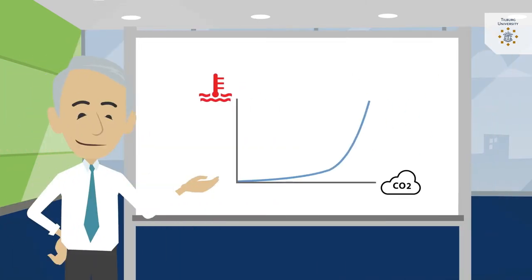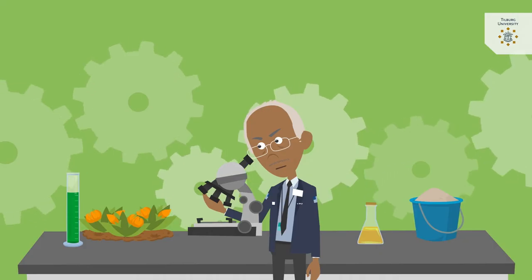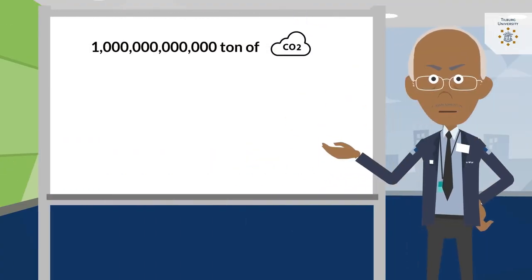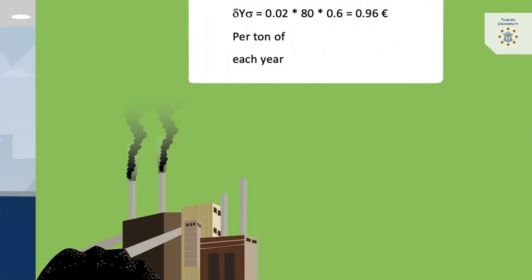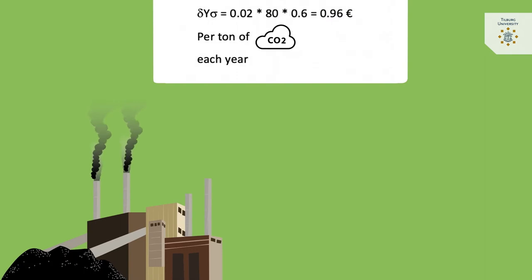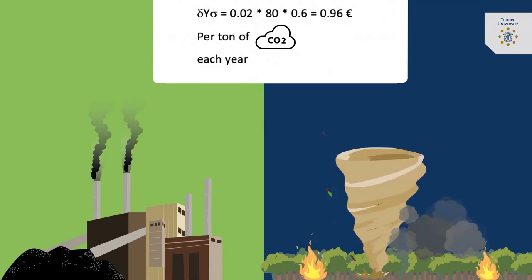The second step is that we find out the climate sensitivity. Economists rely on their colleagues in natural sciences who use large climate models. They predict that for each million million tonnes of carbon dioxide, global temperatures go up by between 0.5 and 0.7 degrees Celsius. We use the symbol sigma for this climate sensitivity estimate. Multiplying all terms, we find that each tonne of carbon dioxide causes 96 euro cents of damages each year.